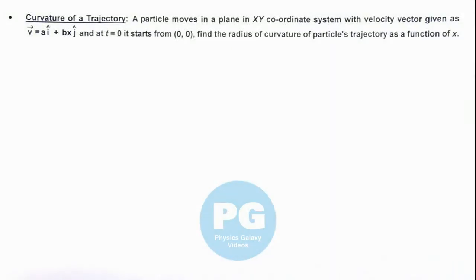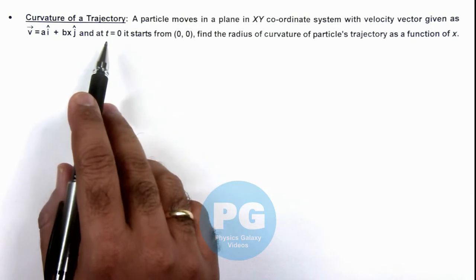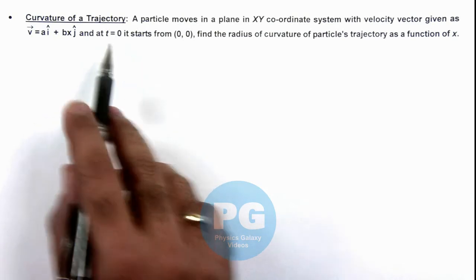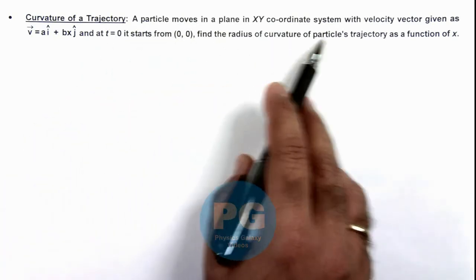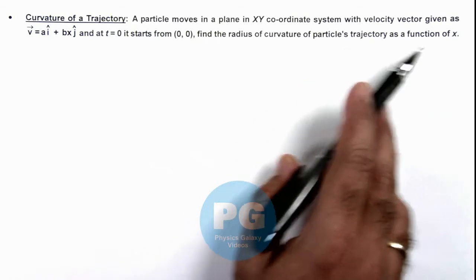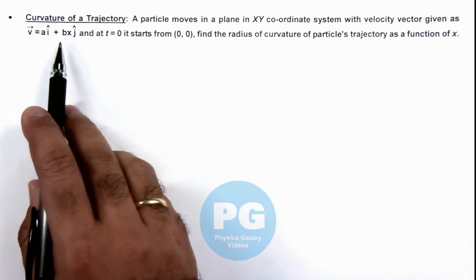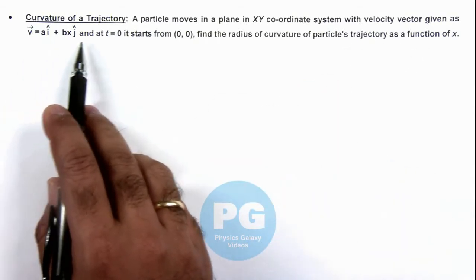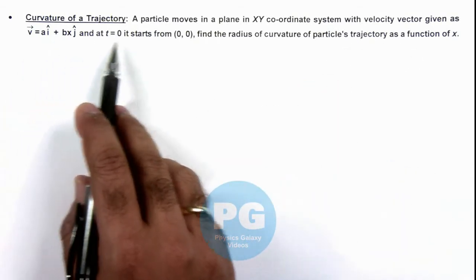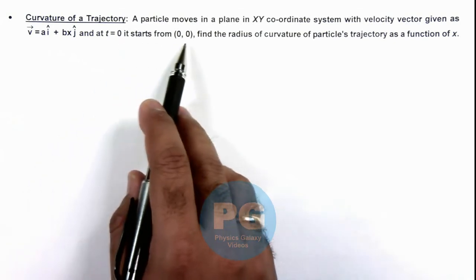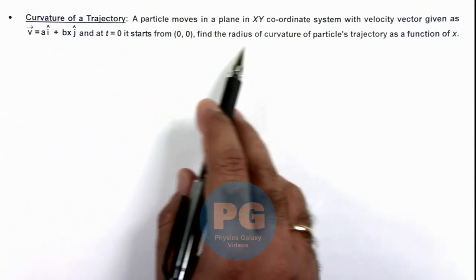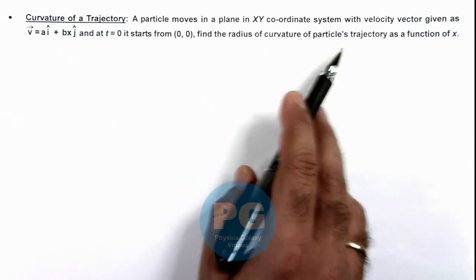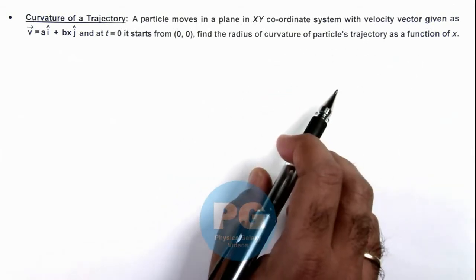In this illustration we'll discuss the curvature of a trajectory. A particle moves in a plane in an xy coordinate system with velocity vector given as ay·î + bx·ĵ. At t equal to zero it starts from the origin (0, 0). We are required to find the radius of curvature of the particle's trajectory as a function of x.